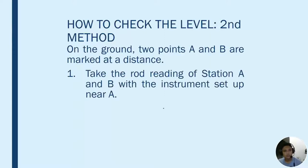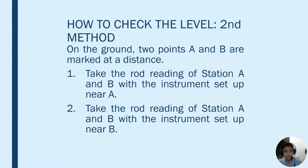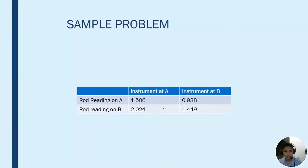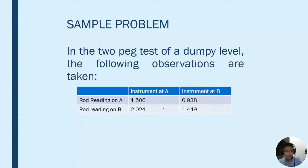For the second method of the Two-Peg test, the procedures are: set up two stations A and B on the ground at a certain distance. Take rod readings at A and B with the instrument set up near A. Then take rod readings at A and B with the instrument set up near B. Finally, determine the correct rod readings at A and B.